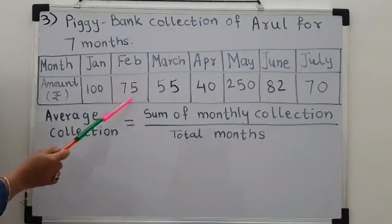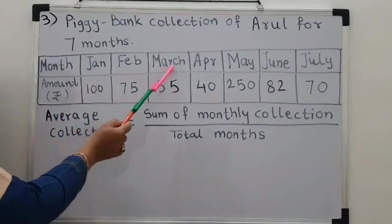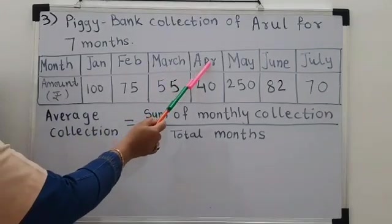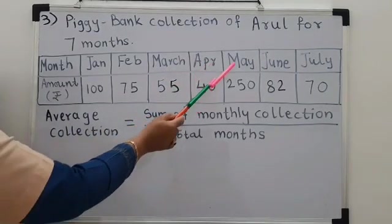In the month of February, it was Rs. 75. In the month of March, it was Rs. 55. In the month of April, it was Rs. 40. In May, it was Rs. 250.